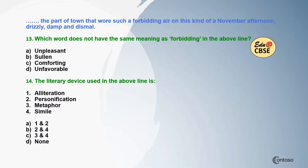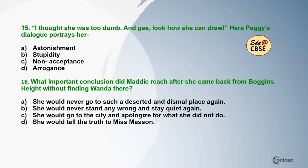Question 13: This line is from the next chapter — 'The part of the town that wore such a forbidding air on this kind of a November afternoon, drizzly, damp and dismal.' Which word does NOT have the same meaning as 'forbidding' in the above line? Question 14: The literary device used in the above line is... Question 15: 'I thought she was too dumb and gay. Look how she can draw.' Here Peggy's dialogue portrays her as...